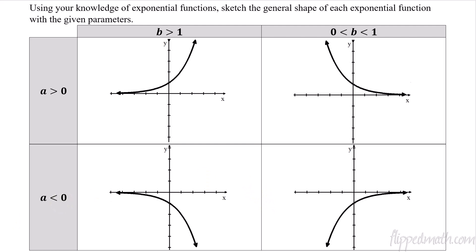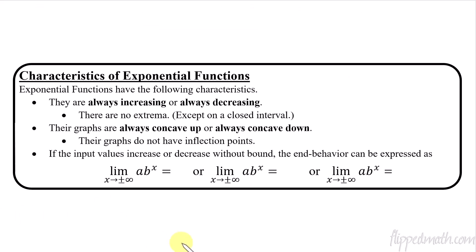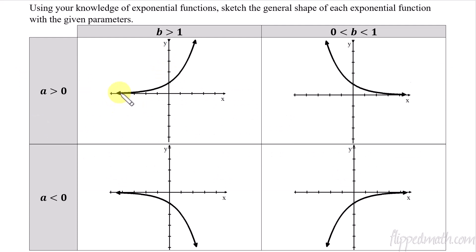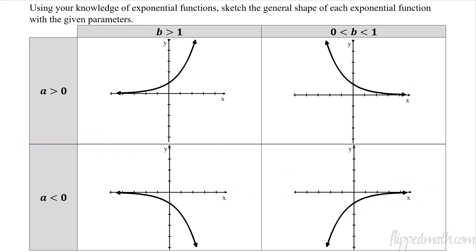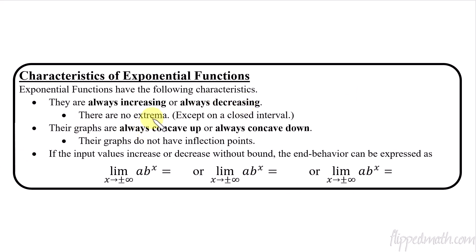The characteristics of exponential functions: the graph is always going to increase or always decrease — it never turns around. Looking at the graphs, moving left to right it either always goes up or always goes down. In other words, there are no extrema unless you're on a closed interval. The function is strictly monotone across its entire domain.